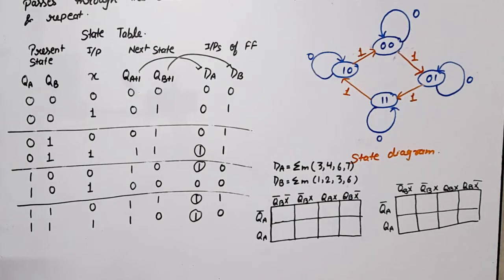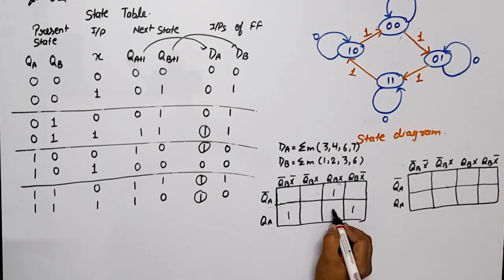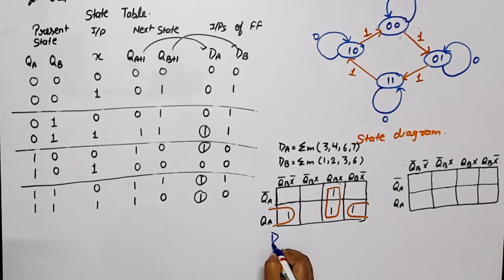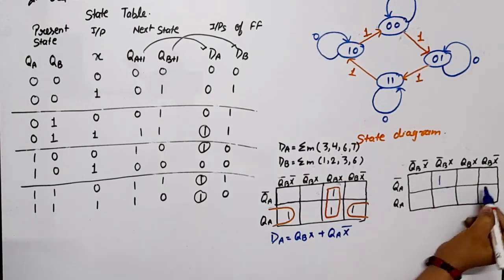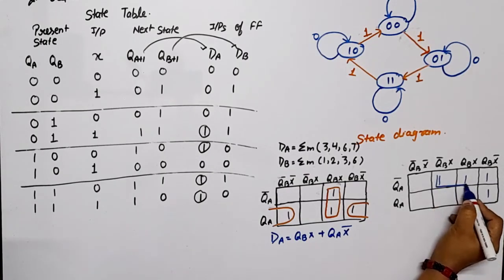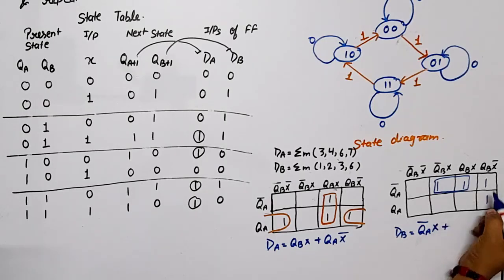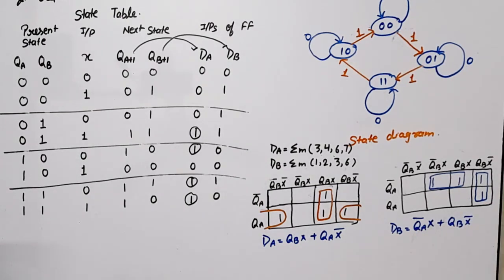From the K-map for DA with minterms 3, 4, 6, 7: pairing the first pair and the second pair gives us the simplified equation. DA equals QB·X plus QA·X̄, where QB·X comes from one pair and QA·X̄ comes from the columns where X̄ is common. For DB with minterms 1, 2, 3, 6: the first pair gives QA̅·X, and the next pair gives QB·X̄. So DB equals QĀ·X plus QB·X̄.